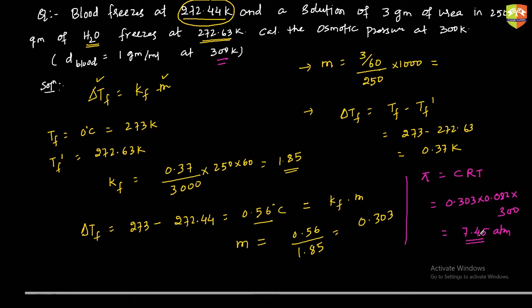The molality calculated is the molality of blood, because we need to find the osmotic pressure of blood. We need the concentration of blood, and to get it we need Kf since Tf and Tf' are given. Find Kf from the urea formula, substitute to find molality of blood, then use π = CRT.